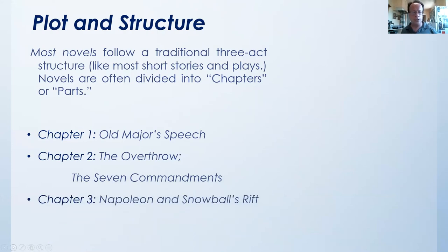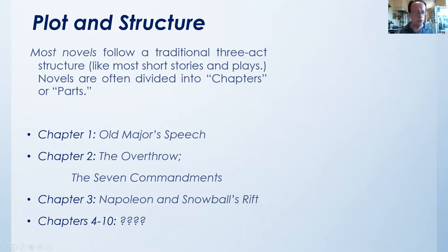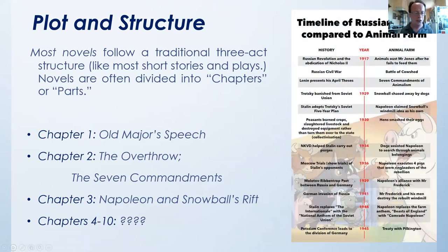We have the rift or the conflict in chapter three between Napoleon — who represents Stalin — and Snowball, who represents a real person, Leon Trotsky, who was exiled from the Soviet Union. Even though he played a large role in the revolution, the Soviet leadership erased him from the history books — it was as if he never existed. For chapters four through ten, you'll just have to read those chapters to find out what happens. I'm not giving away the ending.